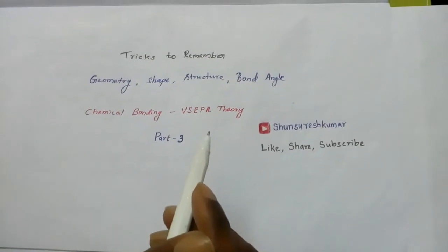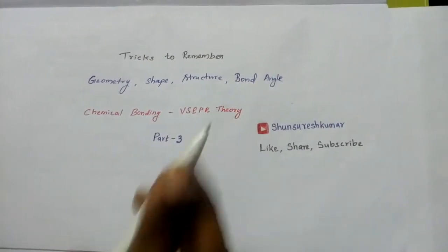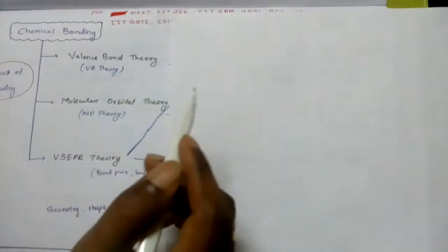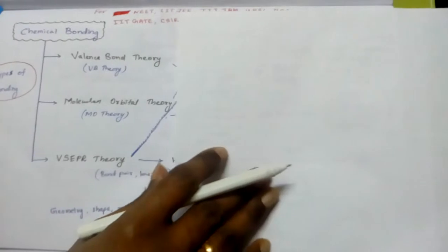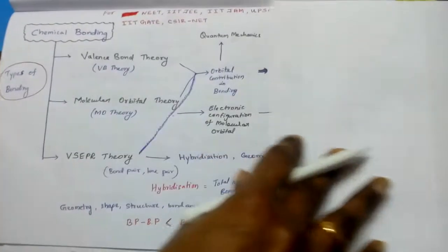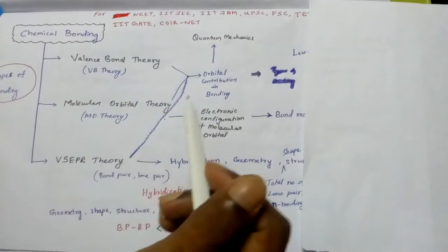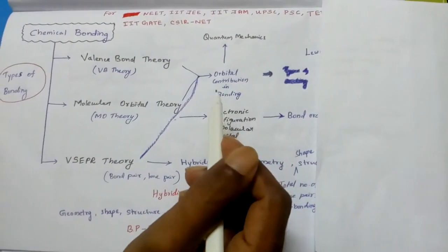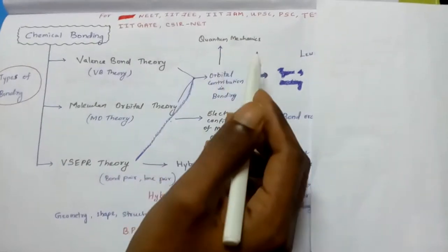In chemical bonding, three important theories are there. What are they? Valence bond theory, molecular orbital theory, and VSEPR theory or valence shell electron pair repulsion theory. Valence bond theory and molecular orbital theory explain the orbital contribution in bonding. This is the basis for quantum mechanics.